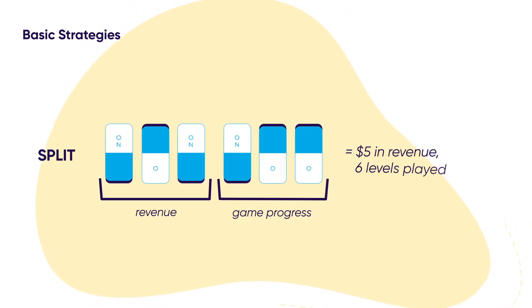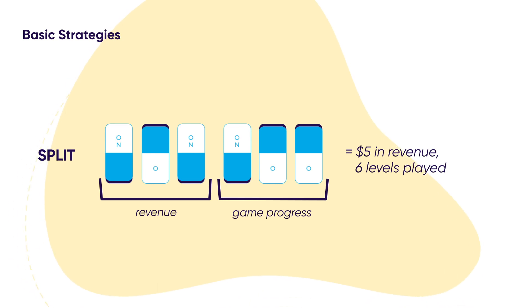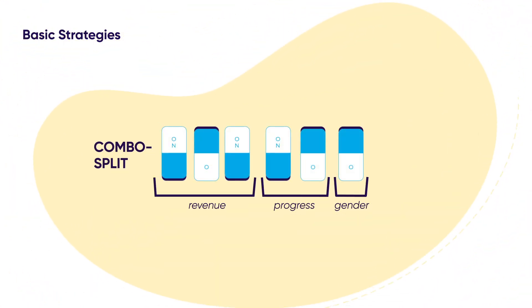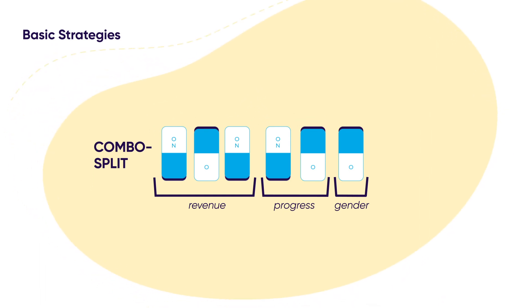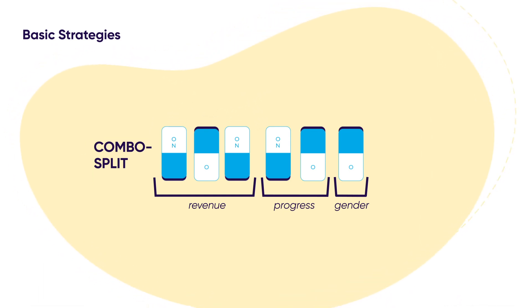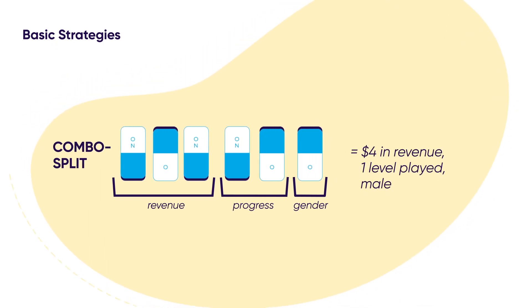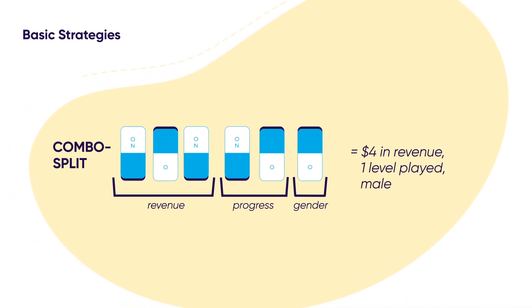Here, the user spent $5 and completed 6 levels. Finally, you can use the combo split. This combines the split method we just saw, plus a deterministic on-off signal. Here, the last split we just saw is used to verify the user's gender.